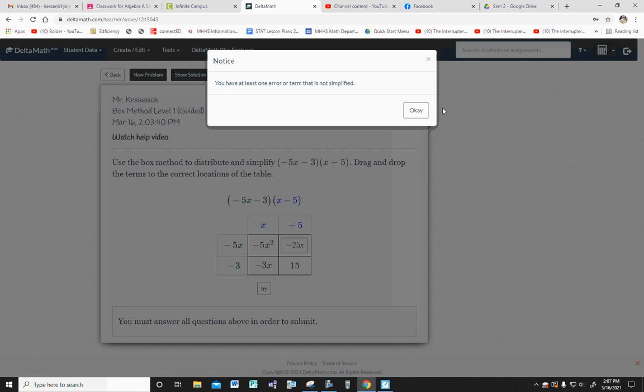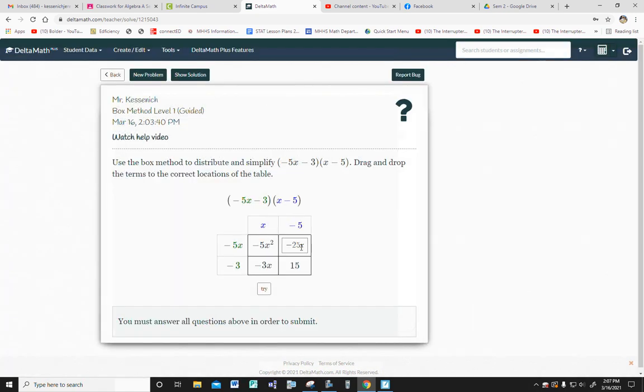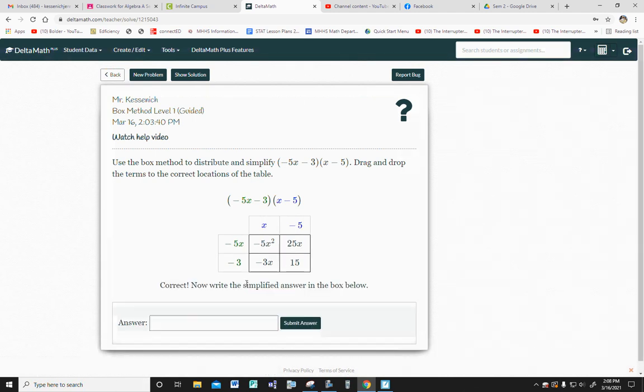You have at least one error that is not simplified. Oh, plus 25. What a goober. Minus 5 times minus 5 is positive. There we go. Correct. Now write the simplified answer. And notice when it did that, it showed me where the error was.